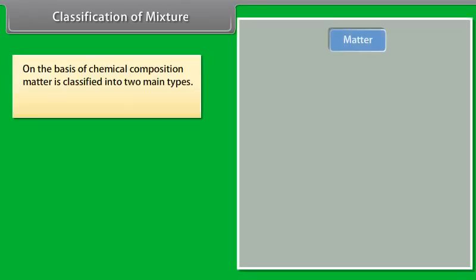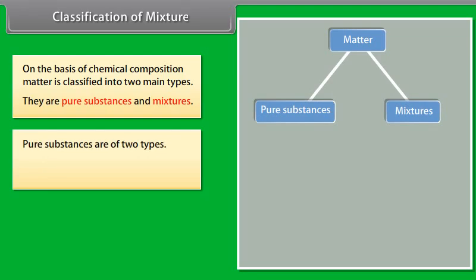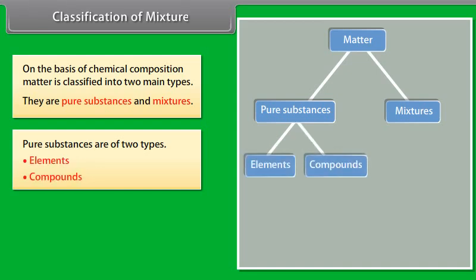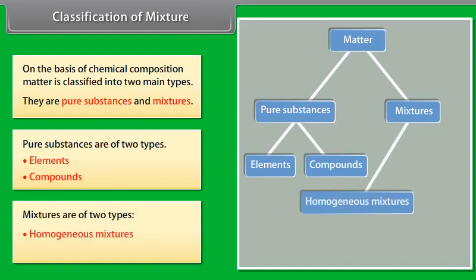Classification of mixtures. On the basis of chemical composition, matter is classified into two main types: pure substances and mixtures. Pure substances are of two types — elements and compounds. Mixtures are of two types — homogeneous mixtures and heterogeneous mixtures.